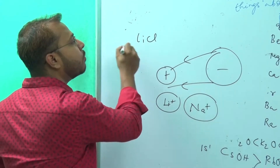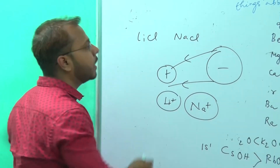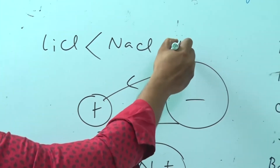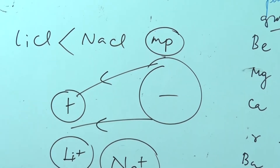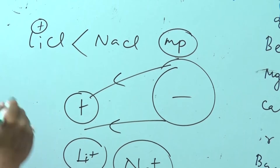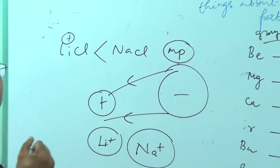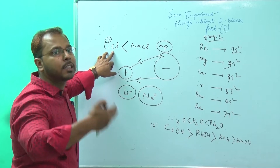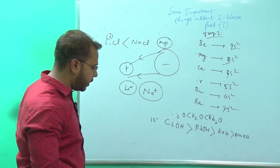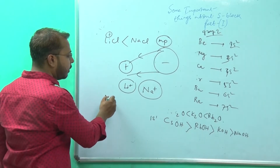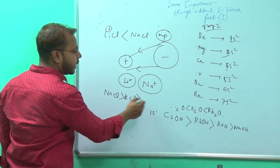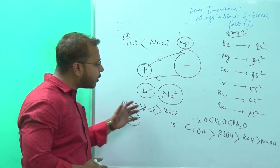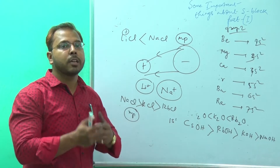So LiCl is more covalent than NaCl. Therefore, NaCl will have a higher melting point than LiCl, because Li+ has higher charge density and attracts Cl- more strongly toward itself, giving LiCl more covalent character. Greater covalent nature means lower melting point. From NaCl to KCl to RbCl, the size of the metal increases, making the lattice more loose, so melting point decreases due to poorer lattice energy.